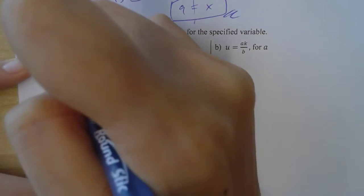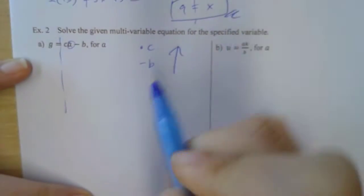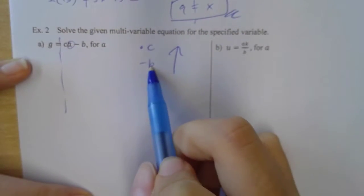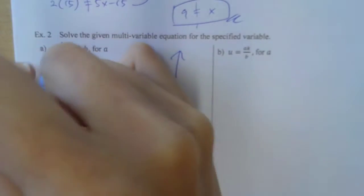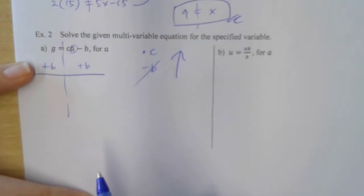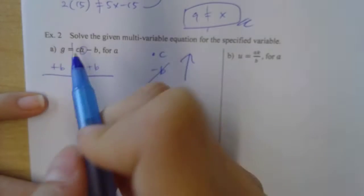So now, to solve for A, I go backwards undoing each of these operations. So first, I gotta add B on both sides. Bam. Sorry for fuzziness. Okay, bear with me. I mean, you have your notes.